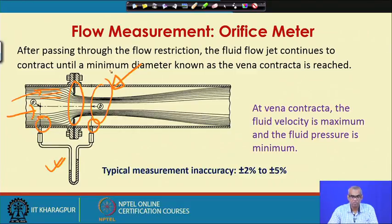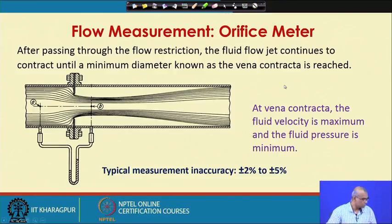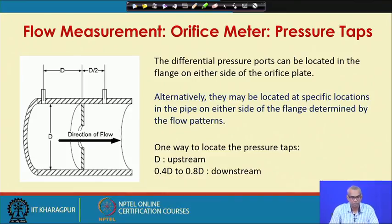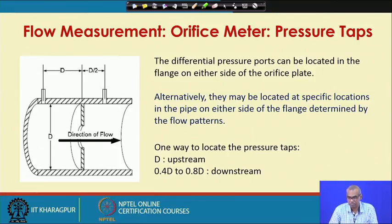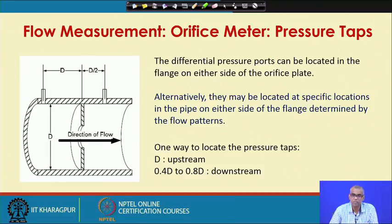The typical measurement inaccuracy of an orifice meter is generally ±2 percent, but sometimes it can go as high as ±5 percent. To measure the flow rate using an orifice meter, we have to measure pressure drop across the orifice plate. The differential pressure ports can be located in the flange on either side of the orifice plate. Alternatively, they may be located at specific positions in the pipe determined by flow patterns — for example, at the vena contracta.